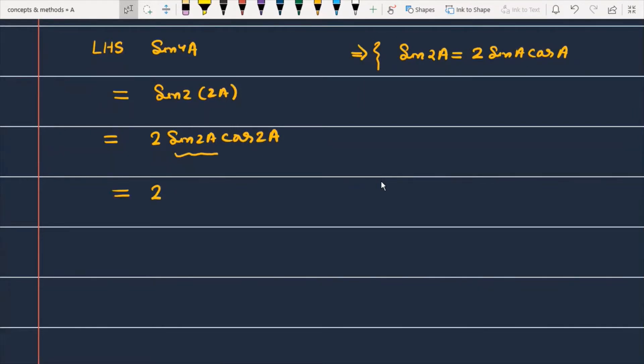This is 2. So I will break sin 2A into cos 2A. This term will become 2 times sin A into cos A.